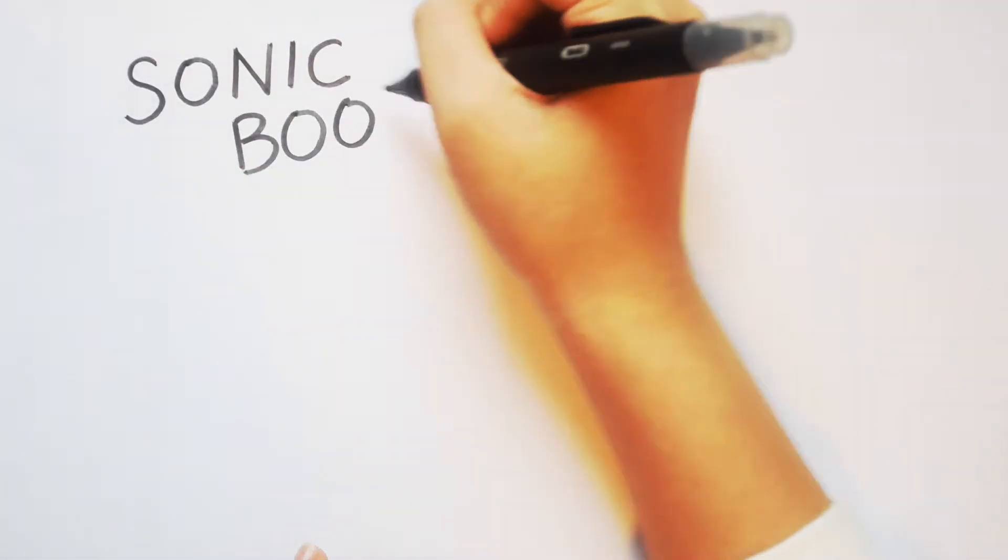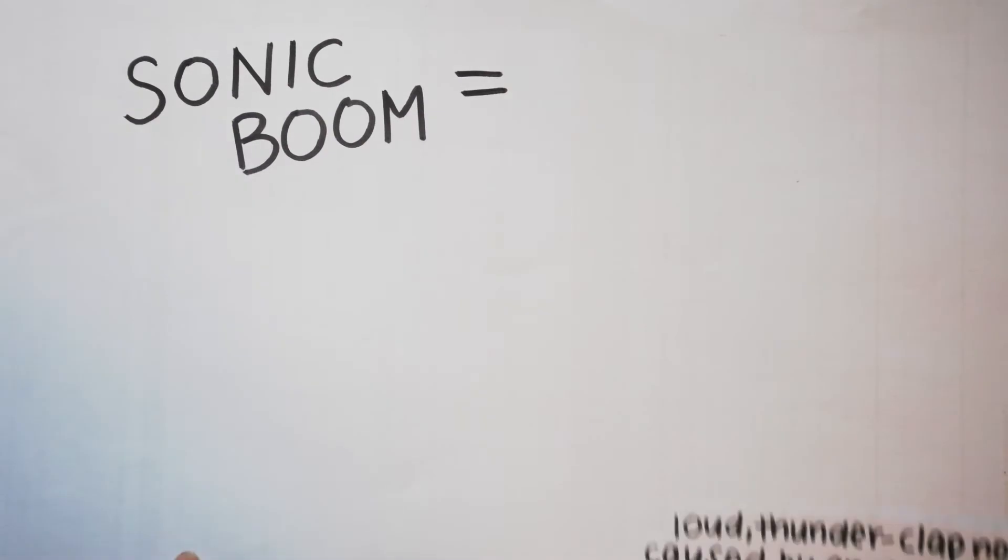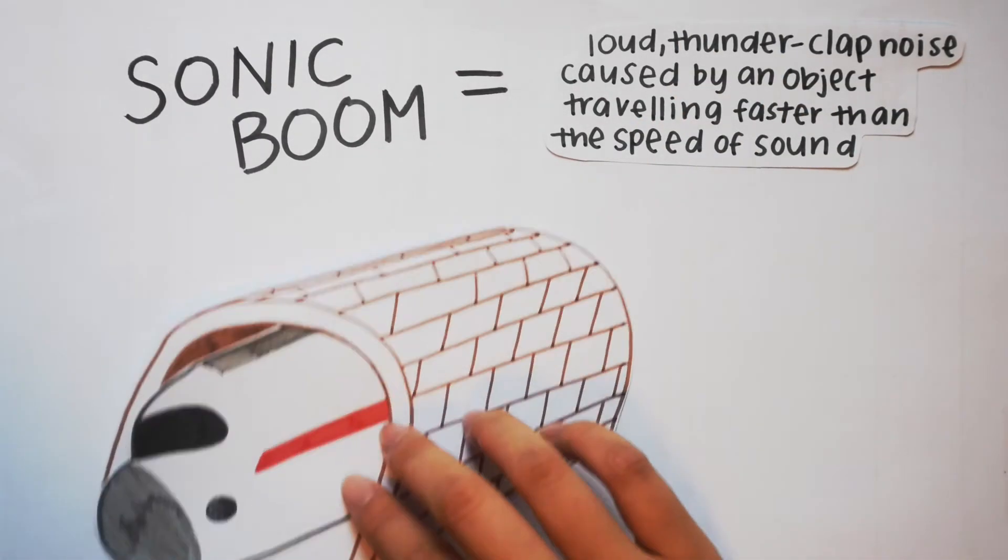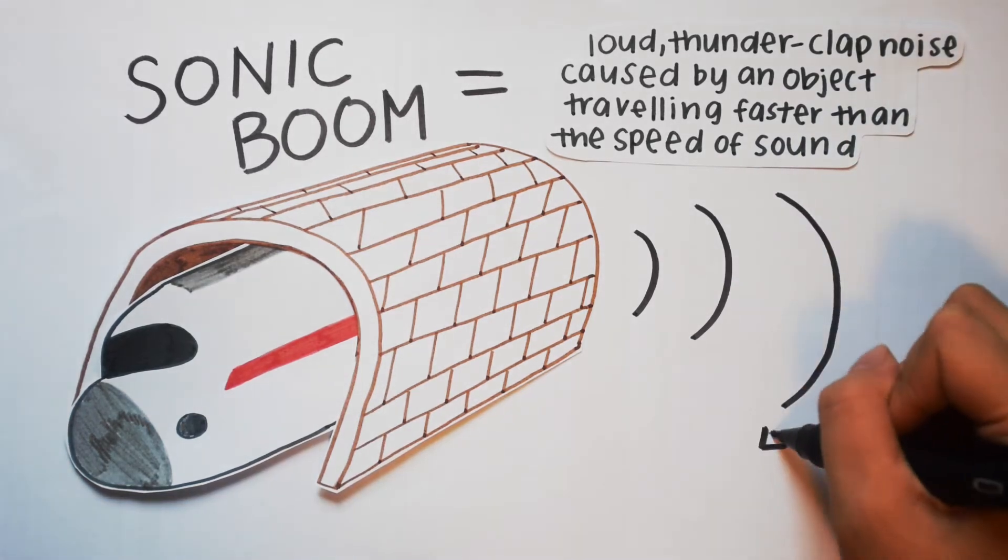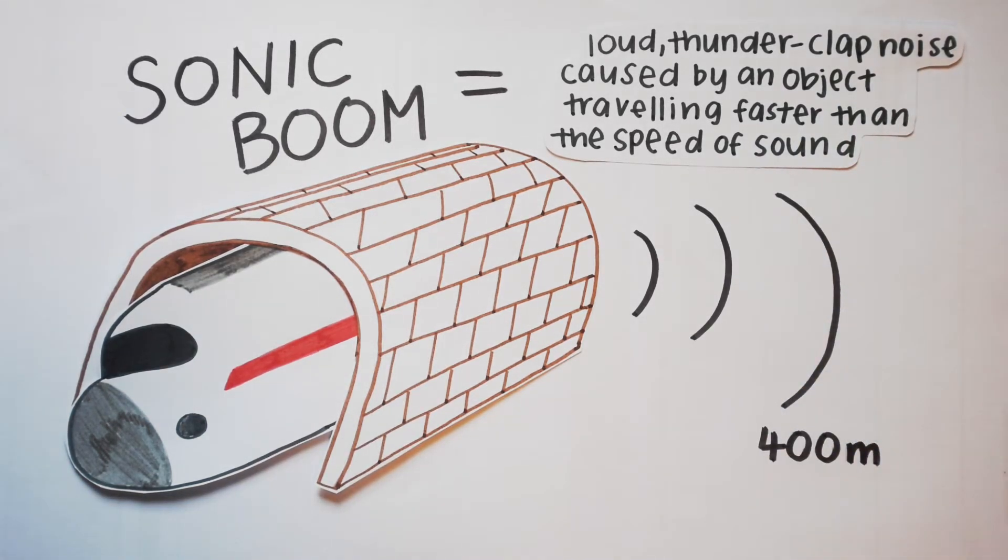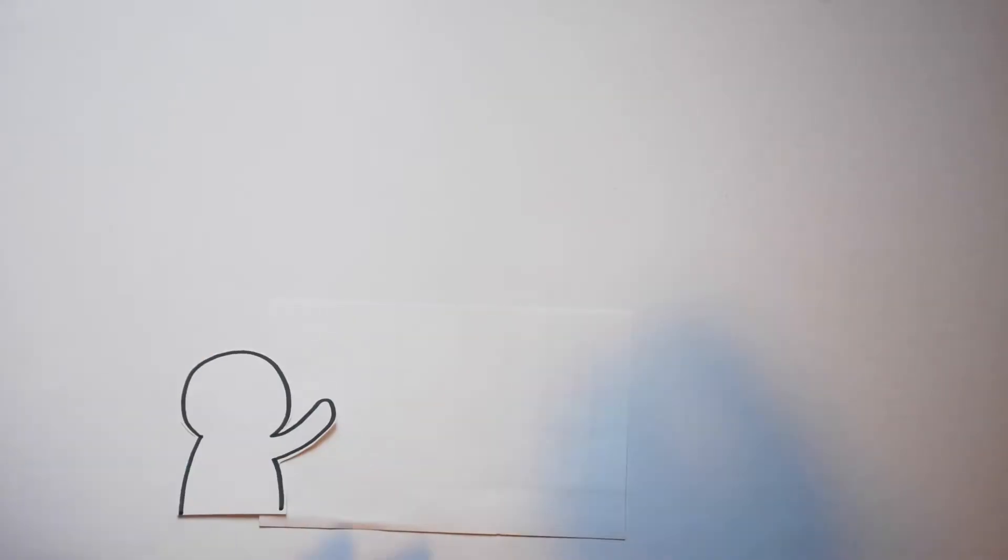One lesser-known example is a soundproofing system that helps keep noise from the Japanese Shinkansen bullet train at an acceptable level. When the train travels at high speeds through tunnels, it creates sonic booms due to the waves of high pressure that build up within the tunnel. At first, the Shinkansen boom could be heard from 400 meters away. To solve this,